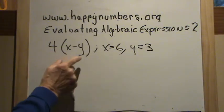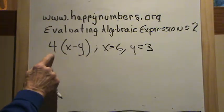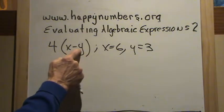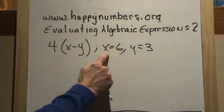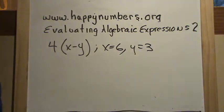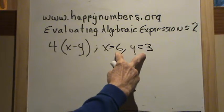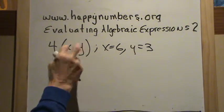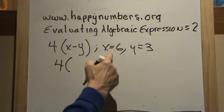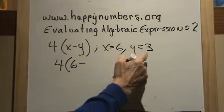We have 4 times the quantity of x minus y, and they tell us that x equals 6 and y equals 3. We work this exactly the same — we substitute the numbers for the variables. So we have 4 times the quantity of 6 minus 3.